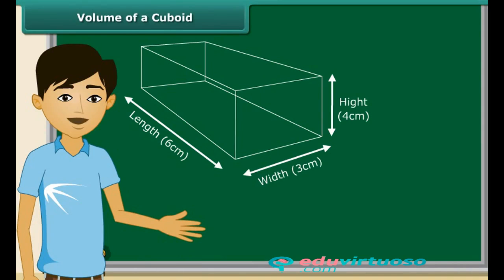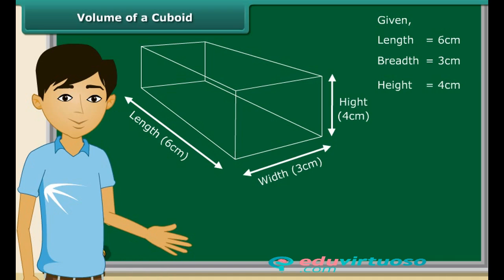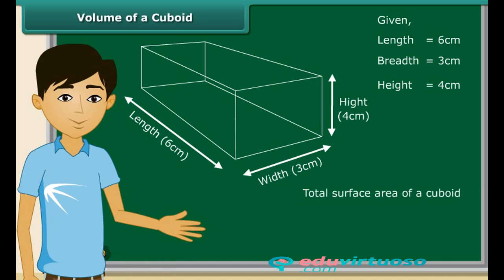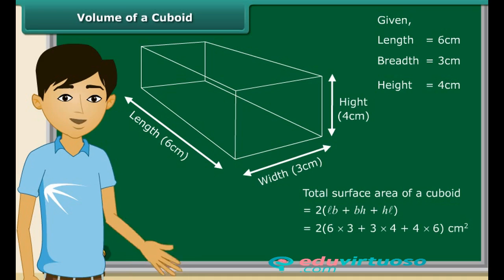You are seeing this cuboid which has length equal to 6 centimeters, breadth equal to 3 centimeters, and height equal to 4 centimeters. Calculation of its surface area is not difficult at all because now we know its formula. Substituting all the values, the surface area of this cuboid is equal to 108 square centimeters.